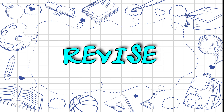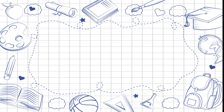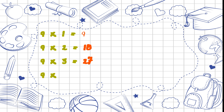Now let's quickly revise the table. 9 1 is 9, 9 2 is 18, 9 3 is 27, 9 4 is 36, 9 5 is 45.